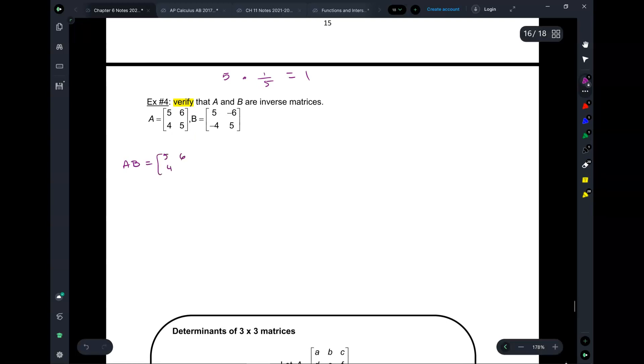So 5, 6, 4, 5 times 5, negative 6, negative 4, 5. And this is exactly the same thing as matrix multiplication, which you guys did on the homework for today. 2 by 2, 2 by 2, what's the product going to be? A 2 by 2.